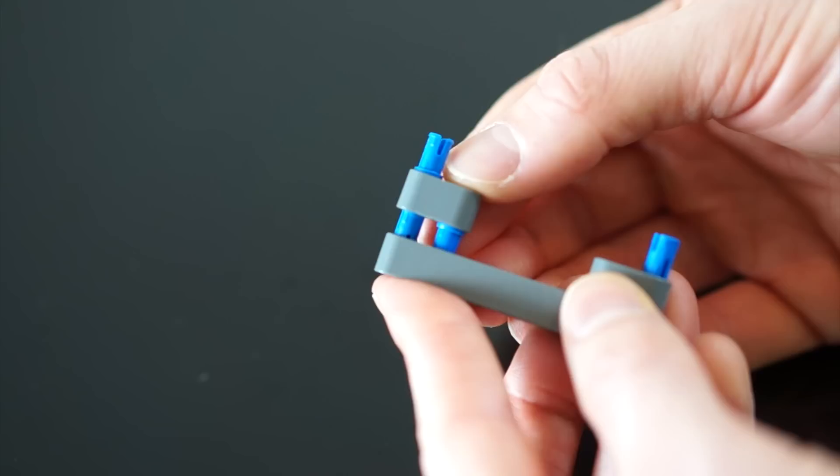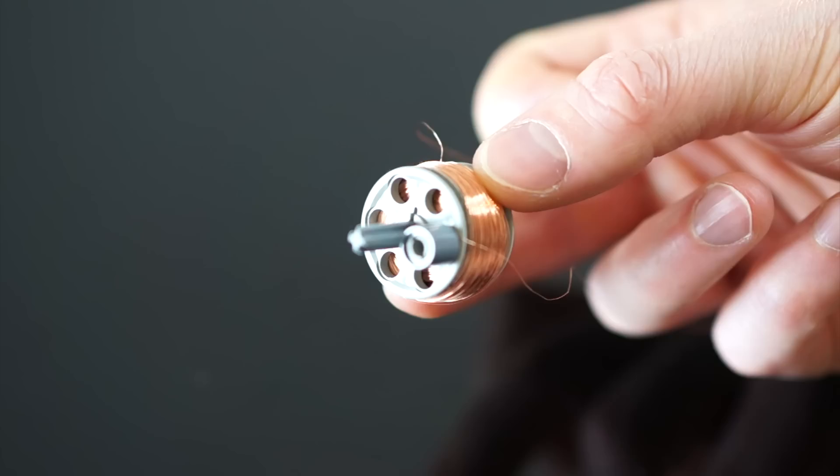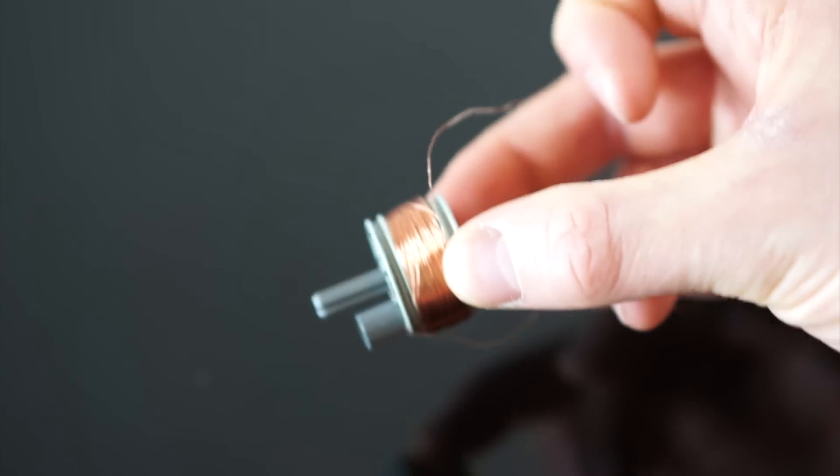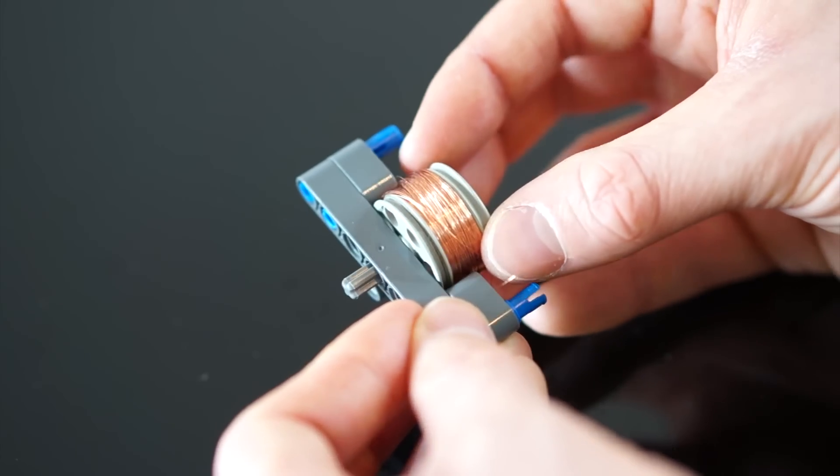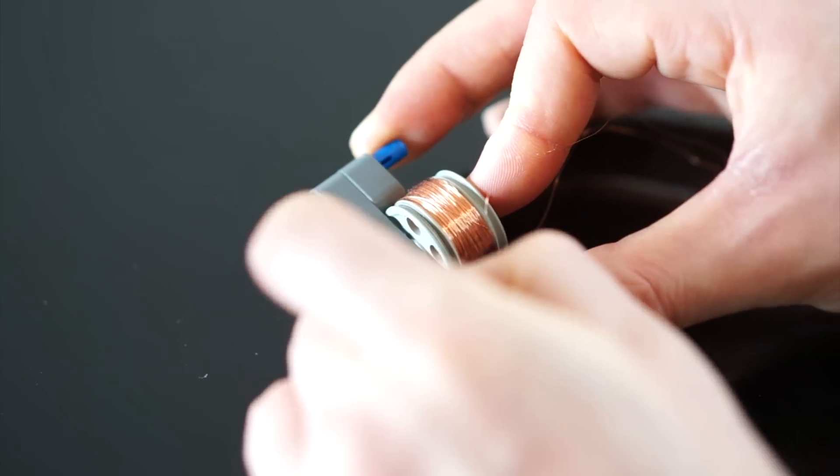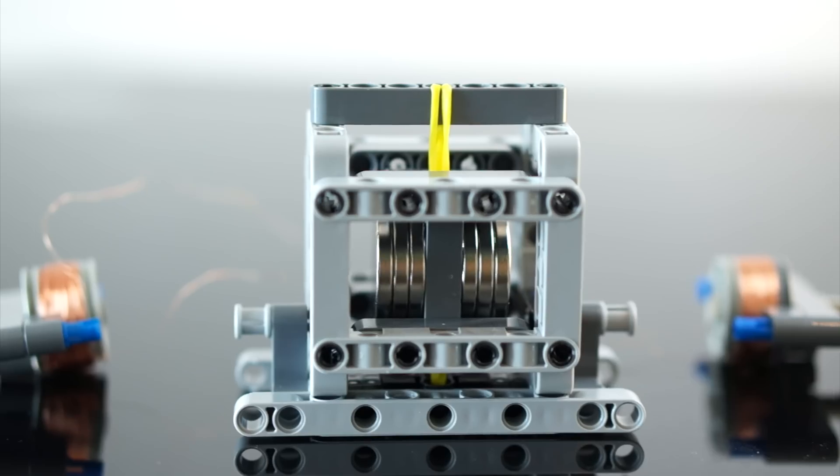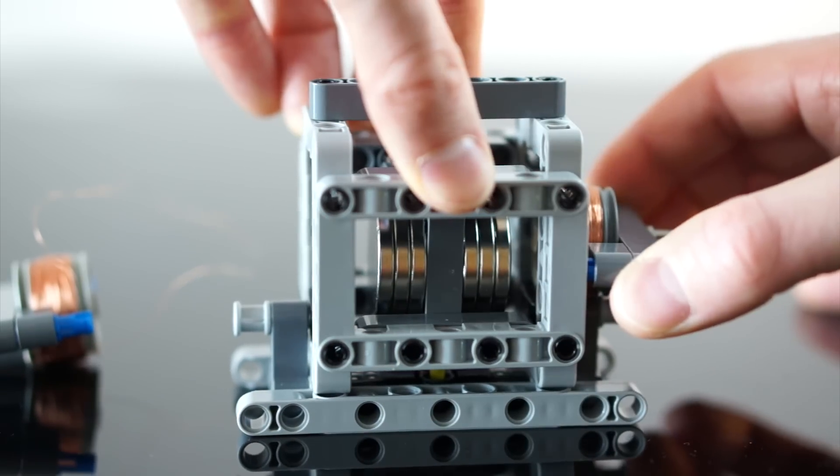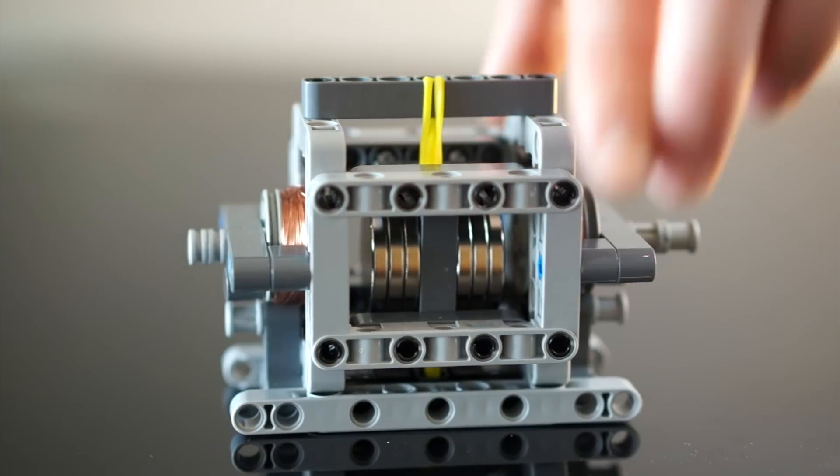Lastly we'll need some wire. These copper nightmarishly thin wired bobbins are perfect, as annoying as they are to work with. Great! We're done!